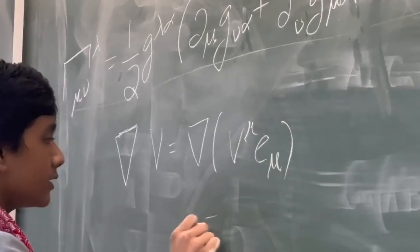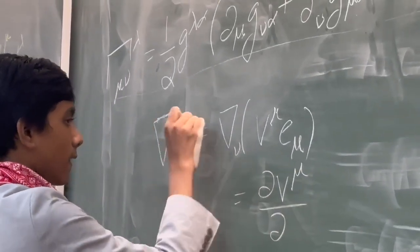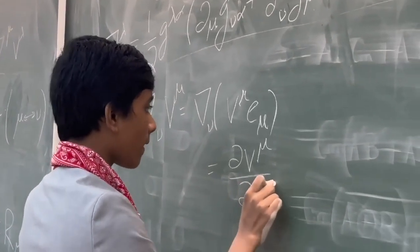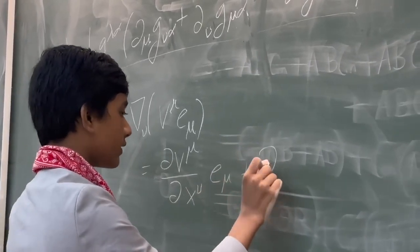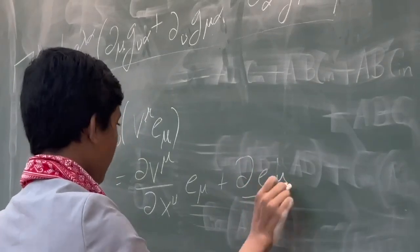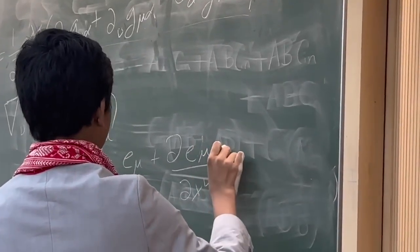Which is equal to this. Oh wait, sorry. This times the basis vector plus the derivative of the basis vector times the original.